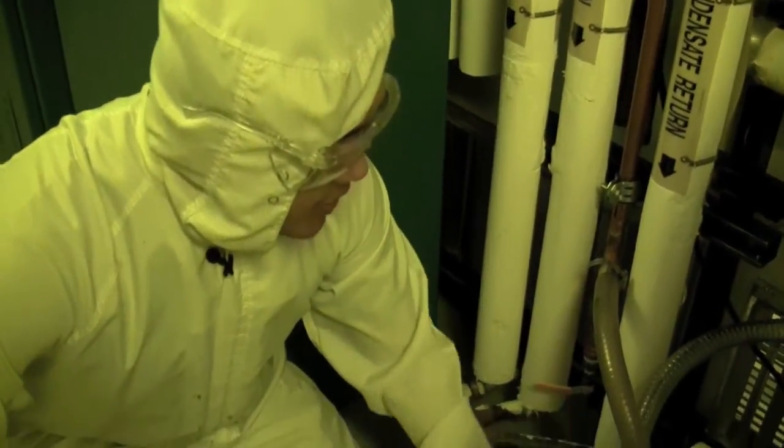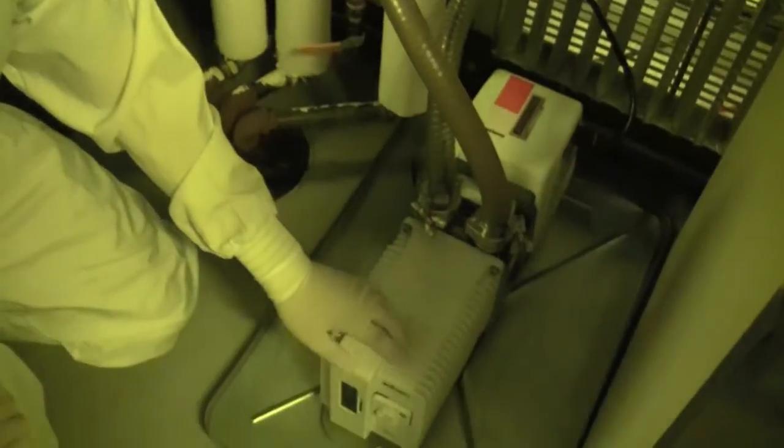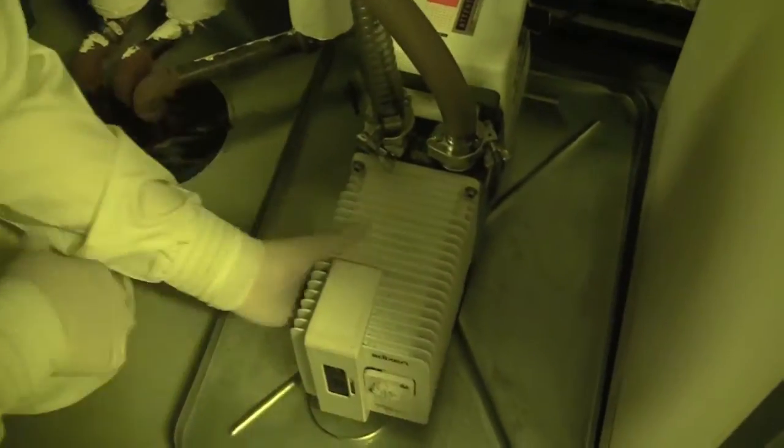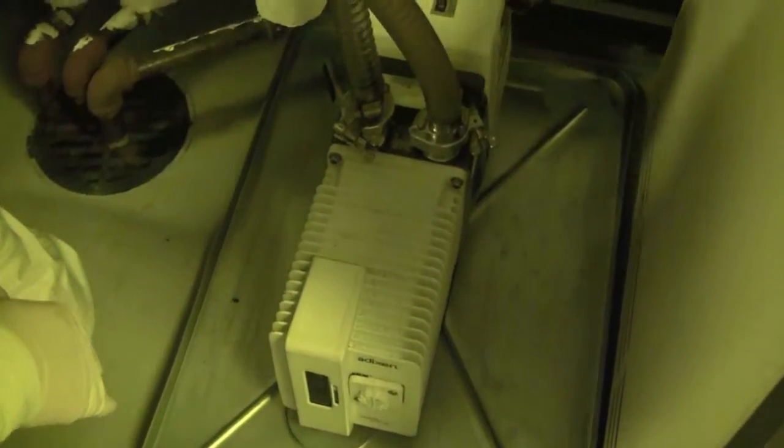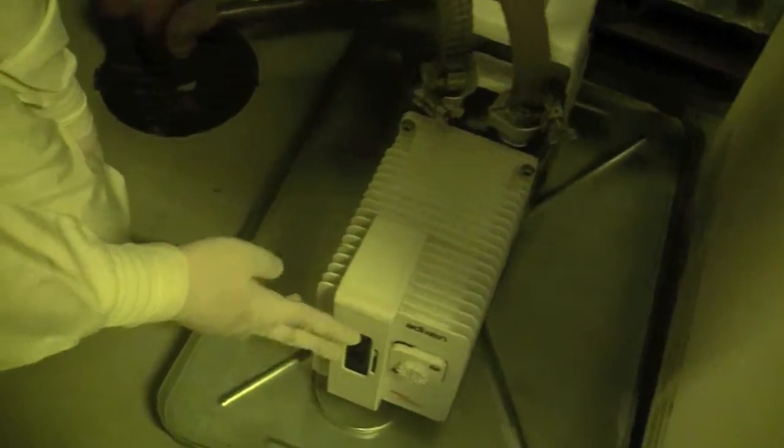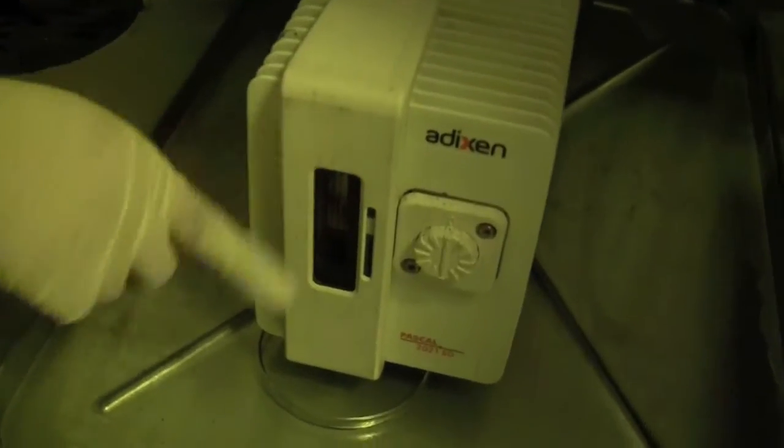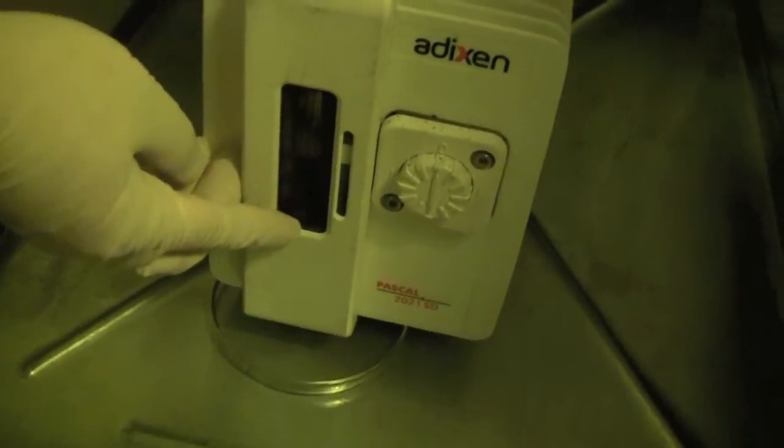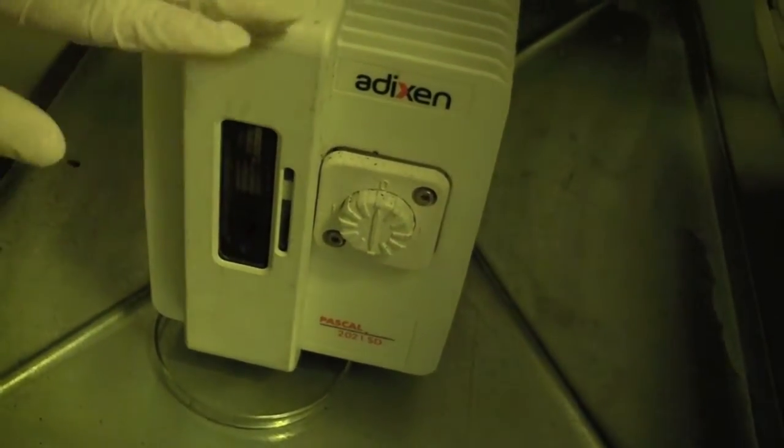This is the pump that's used to create the vacuum for the HMDS oven. We can tell that it's off because there's no vibration and also the power button is off. So before running the pump, we should look at the oil level to make sure that it's in a safe region. We don't want it too low, so make sure there's oil in there and it's not too low, and also it's clean.